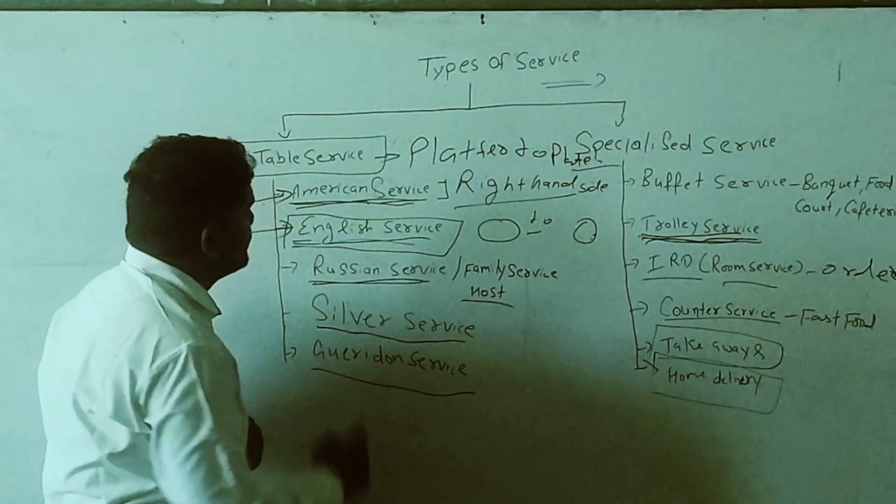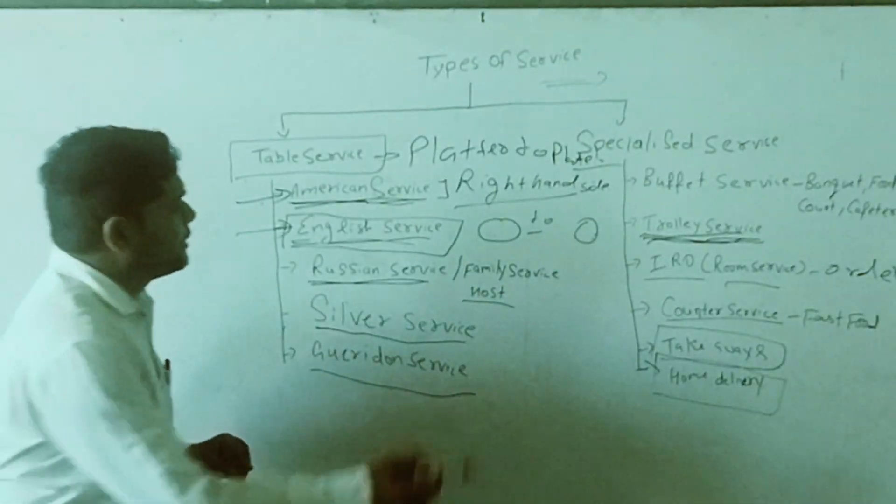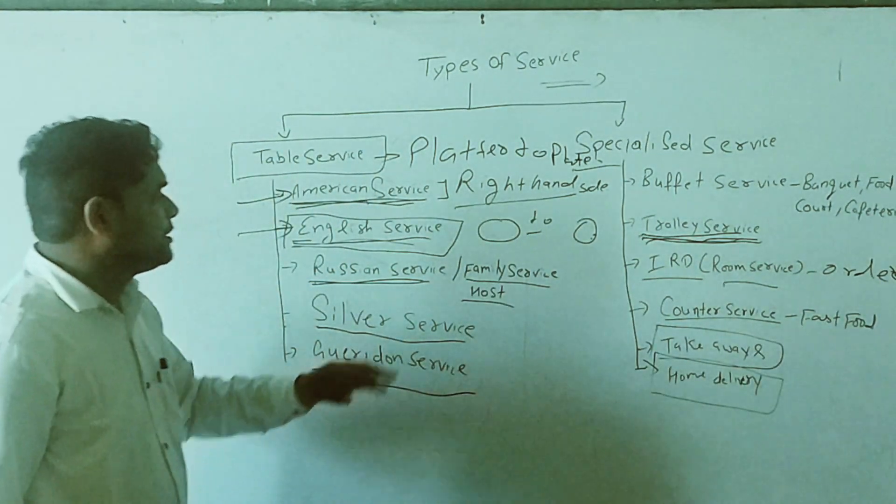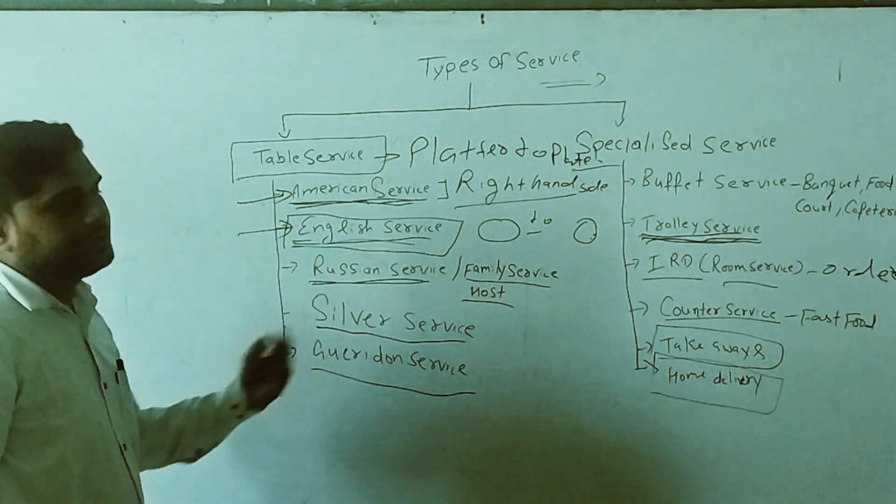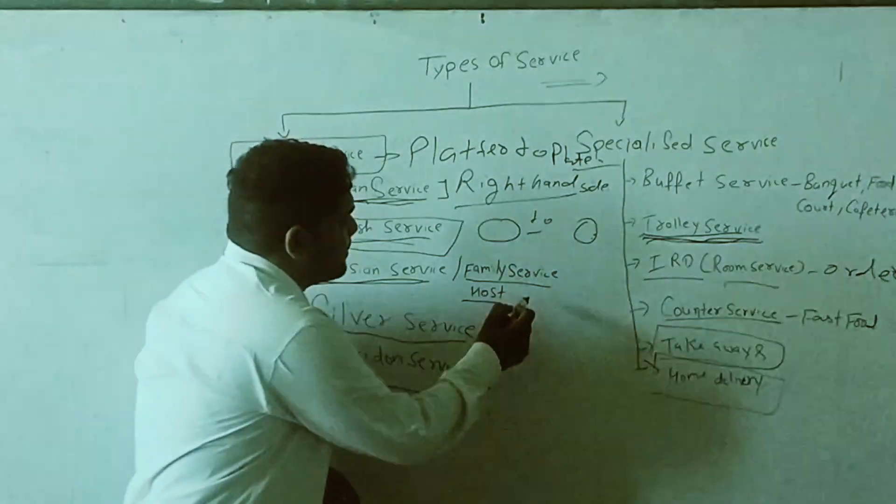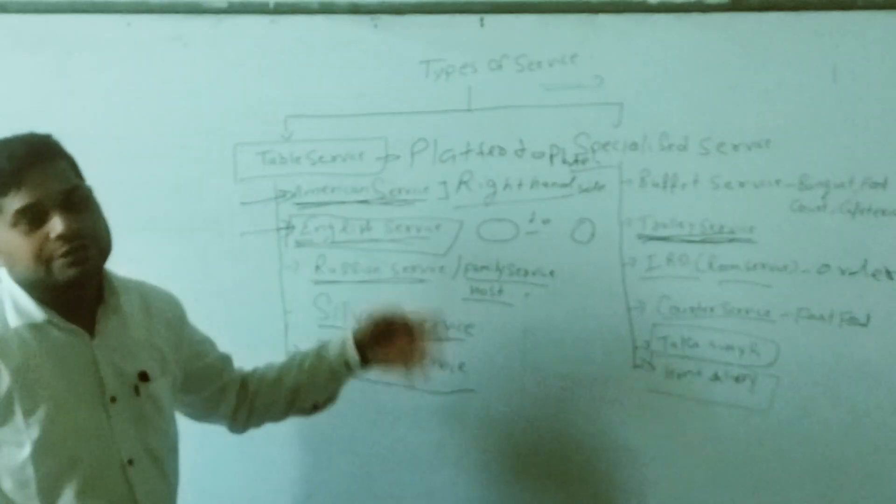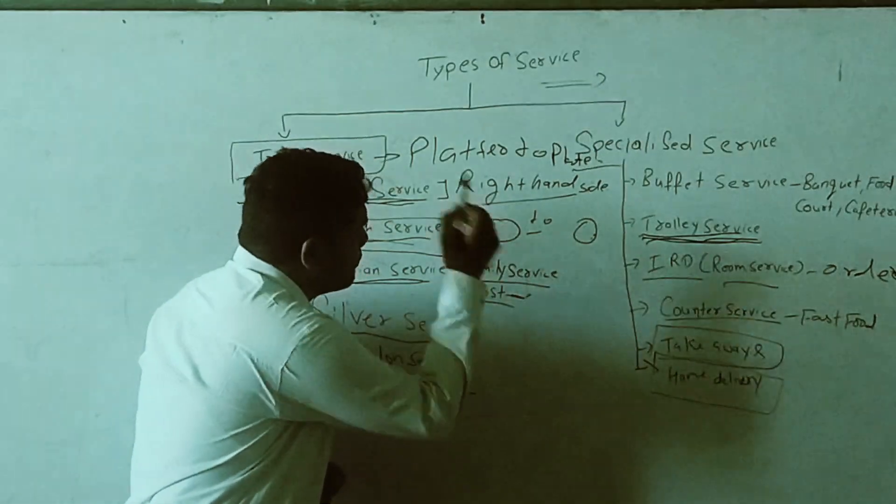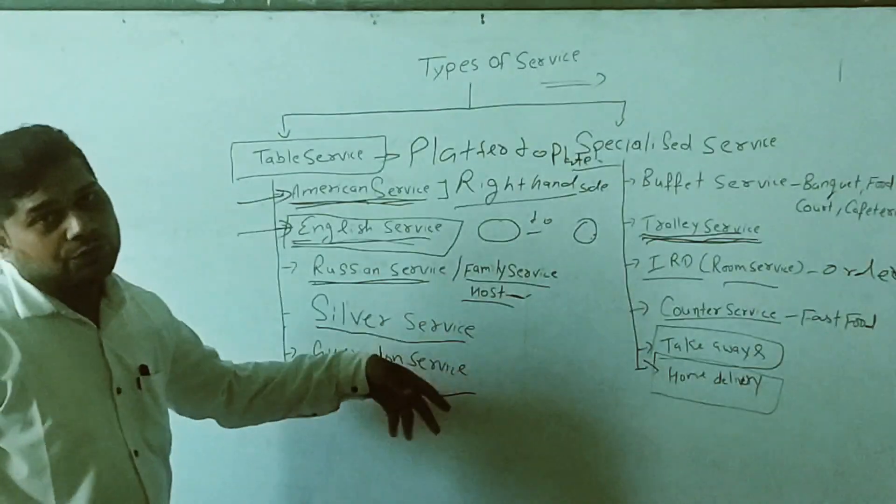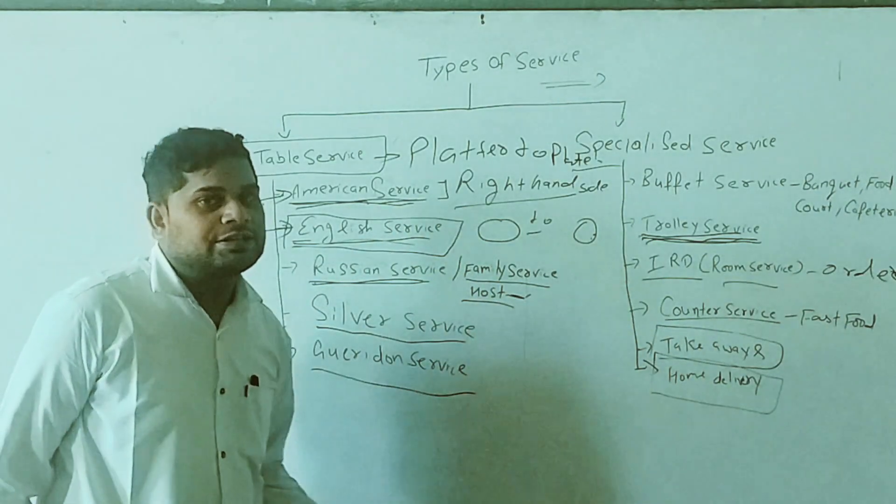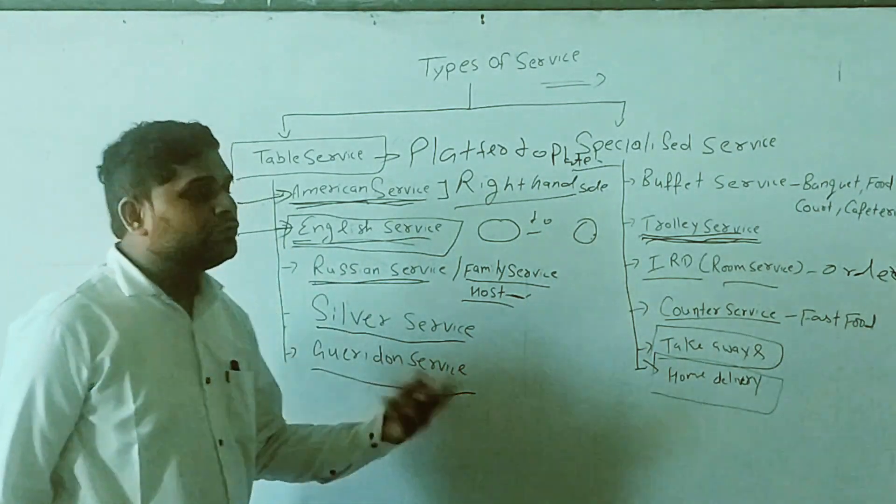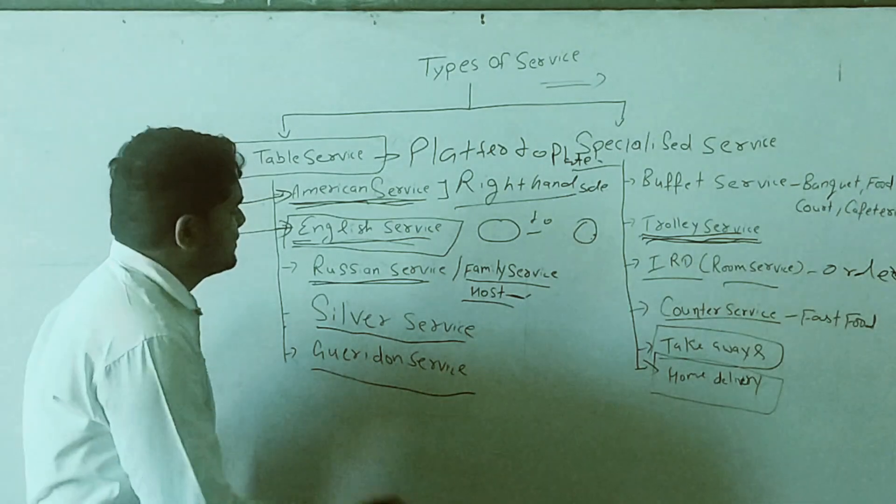Basically the next one is Russian service, and another name is family service. It is very common in a restaurant when a family comes to a hotel or restaurant for eating food. The host displays the food and then the food will be served on the guest table, and then the host will serve the food themselves.